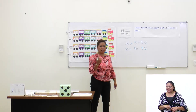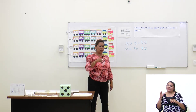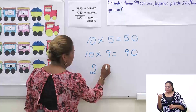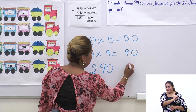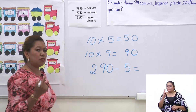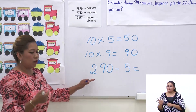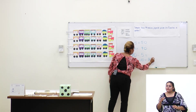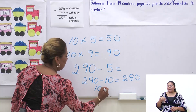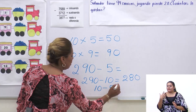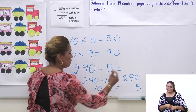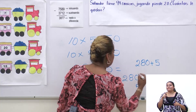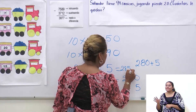También estuvimos trabajando con algunas estrategias para restar a un múltiplo de 10 un dígito. Un dígito son todos los números del 0 al 9. Entonces, si tenemos 290 y le restamos un dígito como el 5, ¿qué hacemos? Complementábamos a 10: le quitamos 10 a 290 y nos quedan 280. A esos 10 le restamos 5 y nos da 5. Entonces 280 más 5 nos da 285, que es nuestro resultado.